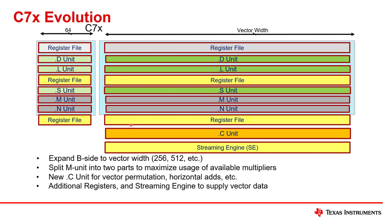Notice all these additional register files. Remember from the previous diagram we talked about global registers and local registers — that's a distinction that does not exist on C6000, where there were just global registers. We didn't have this concept of local registers on C6000.